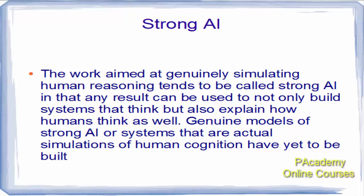There are different kinds of AI systems. The first kind is strong AI. Work aimed at genuinely simulating human reasoning tends to be called strong AI — any result can be used to not only build systems that think but also explain how humans think. Genuine models of strong AI — actual simulations of human cognition — have not yet been built. Strong AI deals with building systems that can completely act like humans and replace human thinking in any given situation.